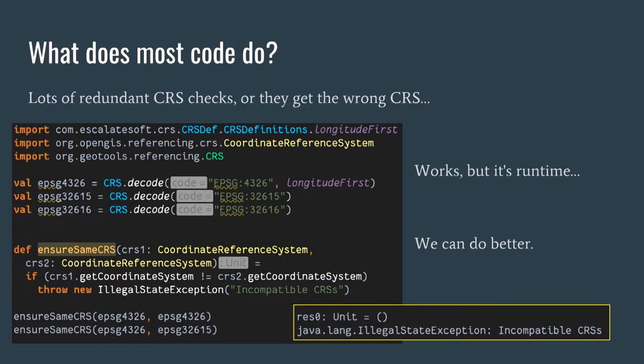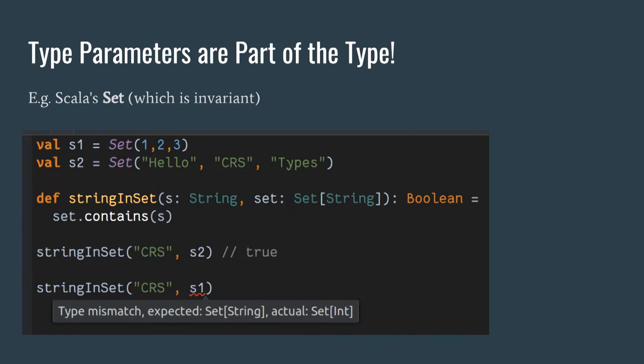Most code up until now does lots and lots of redundant coordinate reference system checks. You make sure that the CRSs are the same or as expected when you use them — something like an 'ensure same CRS' function that compares the two and throws an exception if they don't match. We rely on those runtime checks to make sure everything's working.